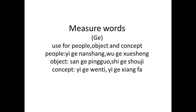In total, we will discuss three or four measure words in this session. The first measure word is 个 (gè). It's not just 'G' — it is called 个 (gè). We use 个 (gè) for people when we talk about quantity.